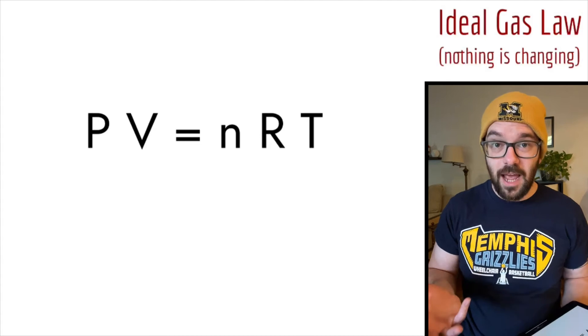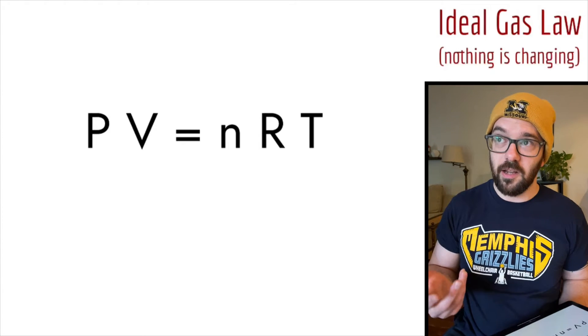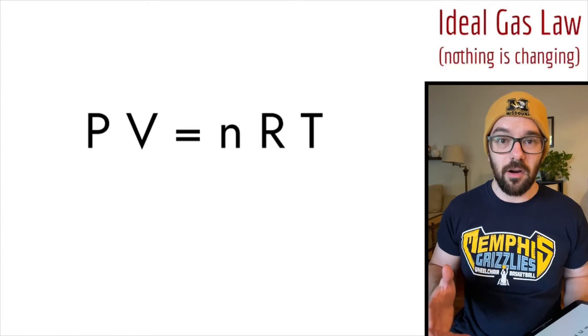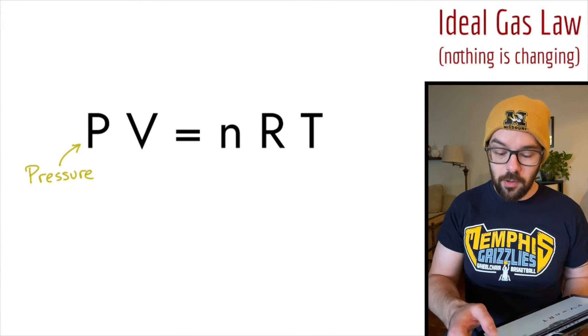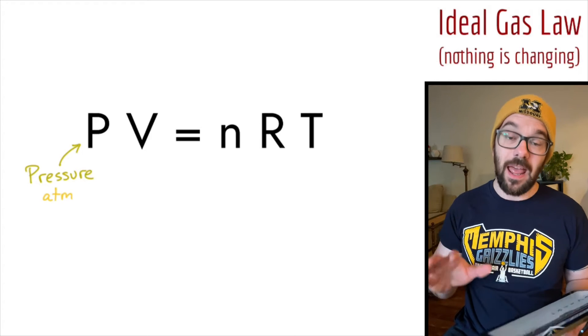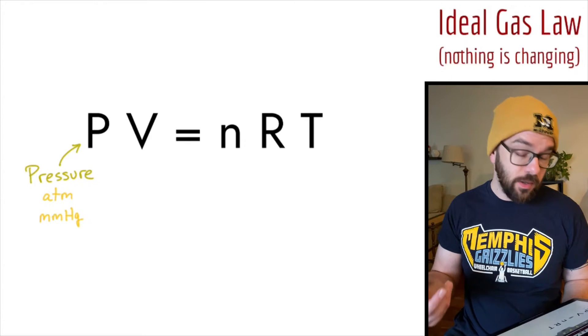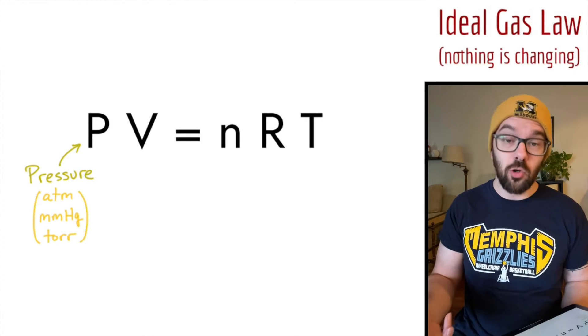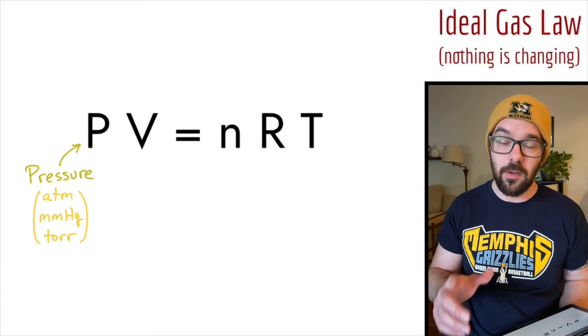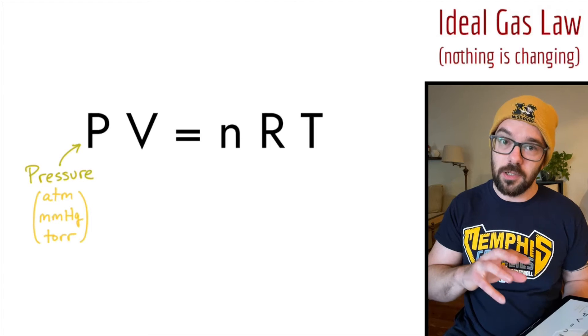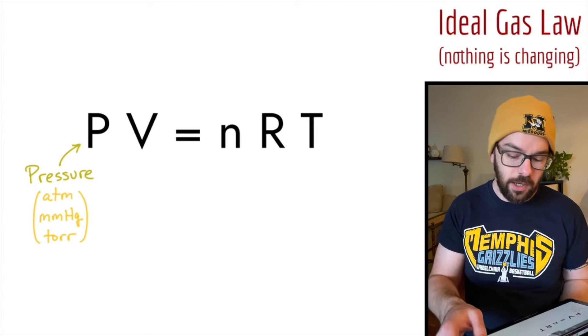All right, so here's the ideal gas law, or PV equals nRT as I think about it to remember what the variables are. In this ideal gas law equation, P stands for pressure, and we're going to see that most often in atmospheres, but it could also show up in millimeters of mercury, it could be in torr, it could be in some other units. Those are the most common three units in the AP exam, and it's important to pay attention to the units in this whole equation.